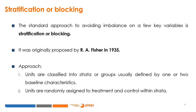The standard approach to avoiding imbalance on a few key variables is stratification or blocking, originally proposed by R.A. Fisher in 1935. In this approach, units are first classified into strata or groups defined by one or two baseline characteristics, and then randomly assigned to treatment and control within each stratum.